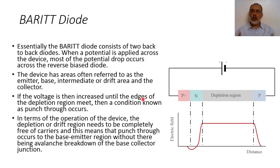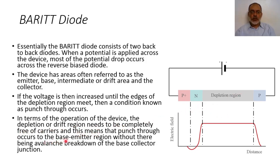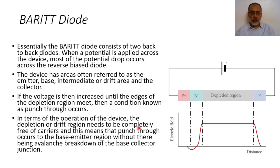In the punch-through, the current will go through this diode. Before the punch-through, there is no current moving through this diode. In terms of the operation of the device, the depletion or drift region needs to be completely free of any carriers. The bunch of carriers reaches the base-emitter region without there being avalanche breakdown — the base-emitter is forward biased, and the depletion region connects to the other depletion region at punch-through without introducing any avalanche breakdown of the base-collector junction.